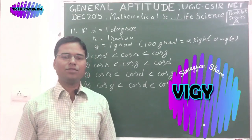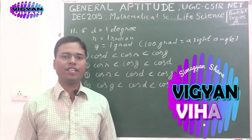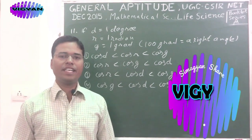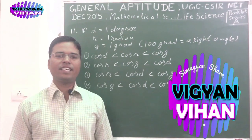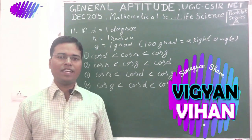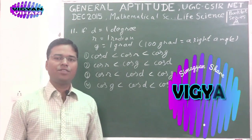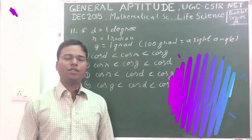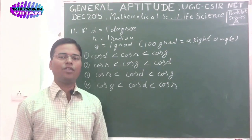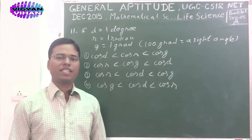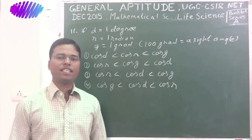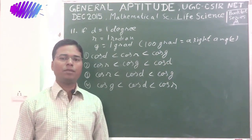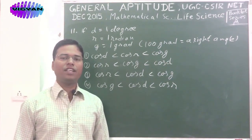Good morning friends, I welcome you all at your favorite YouTube channel Vigyan Meehan. I wish you all a very vibrant, energetic, prosperous Diwali. This is our video for solutions of UGC CSIR net general aptitude part A — the paper of mathematical sciences and life sciences. In this episode, we will solve problems number 11 to 16.